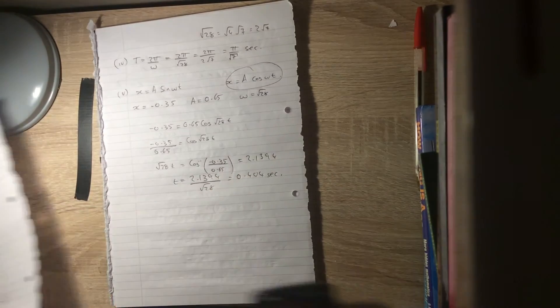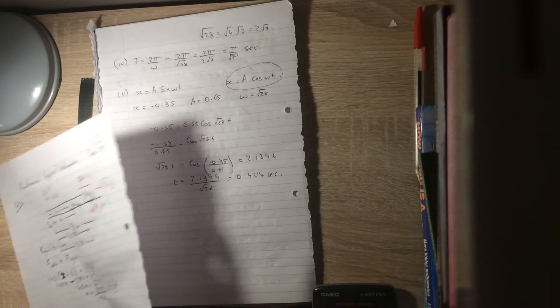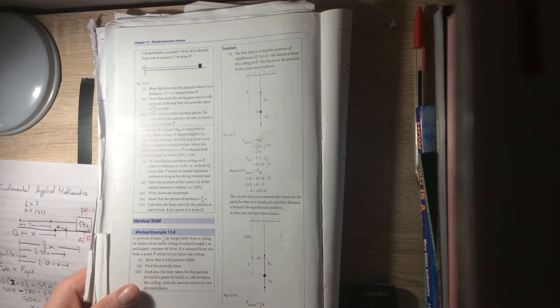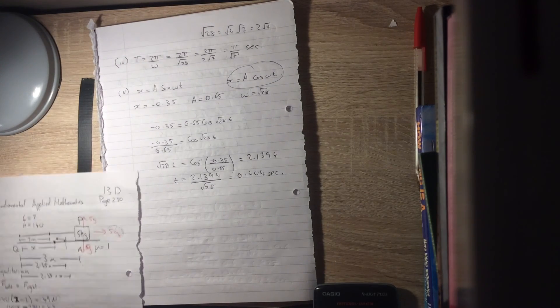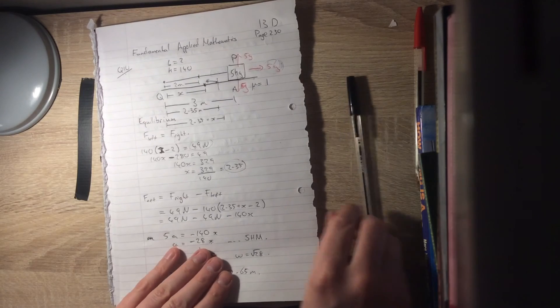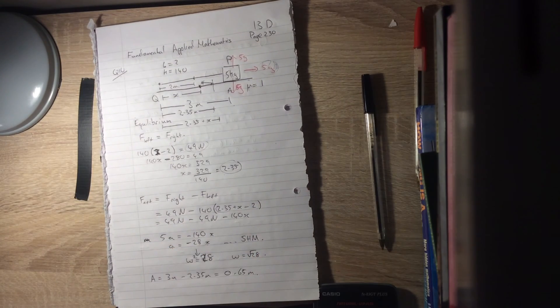That's how long it takes for this particle to travel to 2 metres from Q. At which point the string will go slack and the particle will keep moving, but not with simple harmonic motion. It will just be slowing down under friction, so that's just a normal u-v-a-s-t problem. So we'll leave it there. We'll see you in the next video, bye bye.